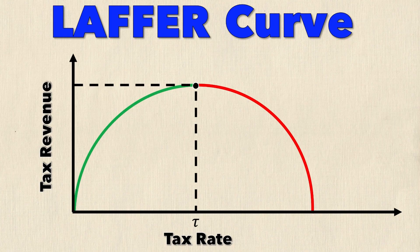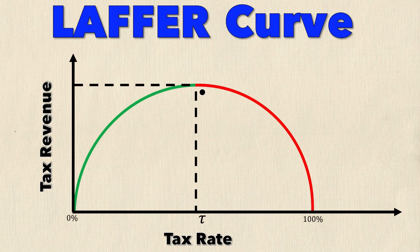Now if the government says let's raise the taxes even further, they'll actually see a decrease in revenue. You can see that as tau increases past that point, your tax revenue will fall. And so that begs the question every government is trying to answer: what is tau? What is the tax rate that maximizes tax revenue? Not too low that there's still money on the table, but not so high that people are disincentivized to work.